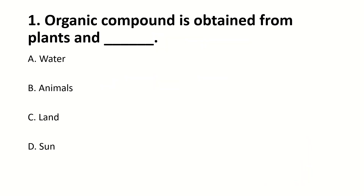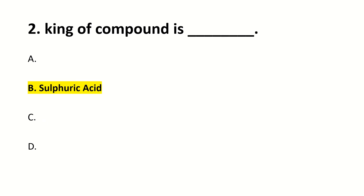Organic compound is obtained from plants and animals — right answer is B. The king of compounds is Sulphuric acid — right answer is Sulphuric acid. Here is H2SO4; if you can see, H2SO4.